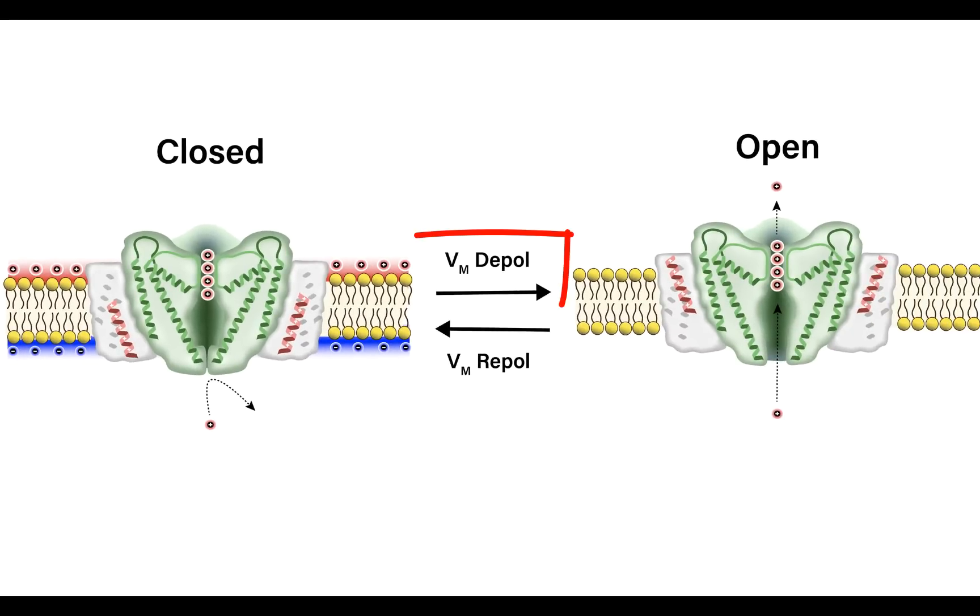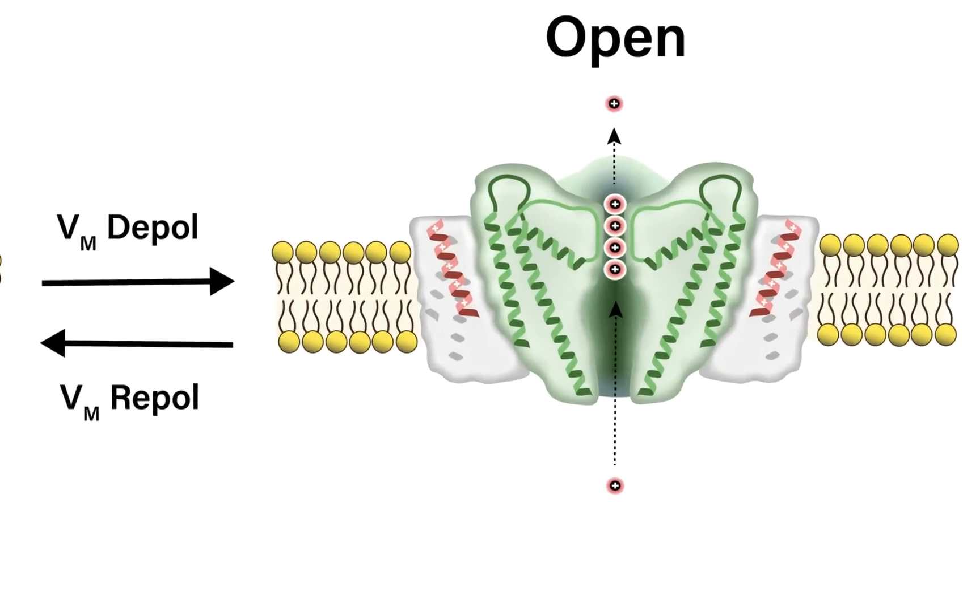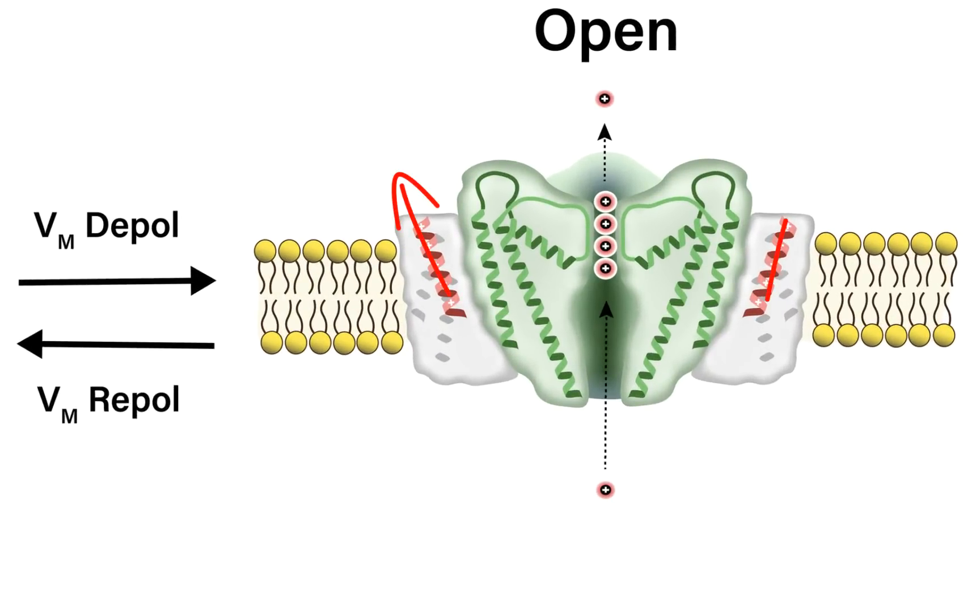When the membrane potential depolarizes, this allows the voltage sensors to relax upward, leading to the opening of the voltage gate, which allows for potassium efflux.